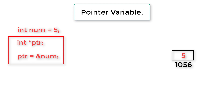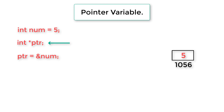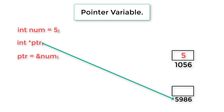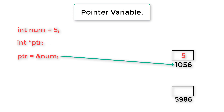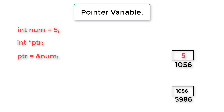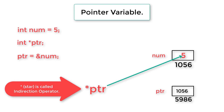Remember: `ptr` since it is also an integer pointer variable, it is also a variable and will have its own address associated with it. So `ptr` holds the address of `num`, for example 1056. `num` has the value 5, and `ptr` has the address of `num` which is 1056. Both `num` and `ptr` have their own addresses. If you write `*ptr`, you will get the value associated with that address.